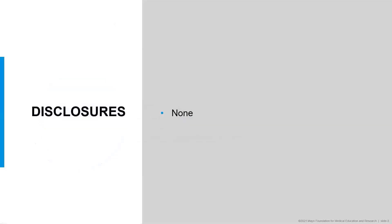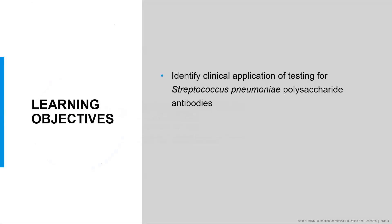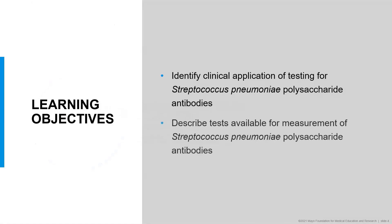Before beginning my presentation, I want to confirm that I have no disclosures relevant to this topic. I have two learning objectives for this presentation. First, for participants to be able to identify clinical application of testing for Streptococcus pneumonia polysaccharide antibodies, and second, for participants to be able to describe tests available for measurement of Streptococcus pneumonia polysaccharide antibodies.